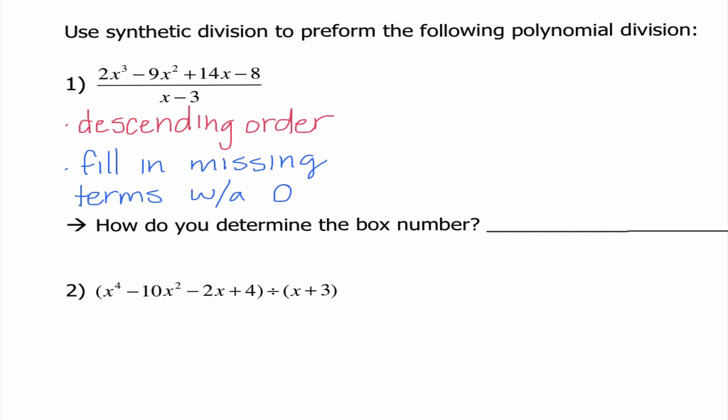So those are really the two things that we need to look at to start with. So I'm going to go ahead and write out a line of our coefficients. If I look at our numerator here, I notice it is already in descending order, and I'm not missing any terms because it goes x cubed, x squared, x constant. So I'm going to go ahead and write 2, negative 9, 14, negative 8.